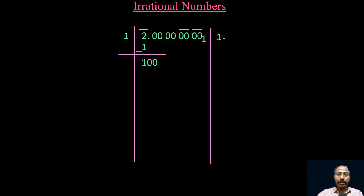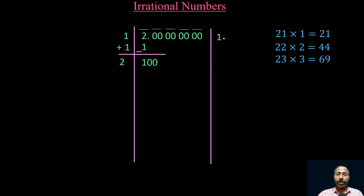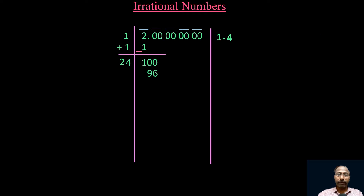Add 1 to 1: we get 2. Now let us see in which multiple 100 will fit. We check: 21×1=21, 22×2=44, 23×3=69, 24×4=96, 25×5=125. Since 125 is more than 100, we take 24×4=96. Subtract 96 from 100: 100 − 96 = 4. Write down the next pair of zeros.